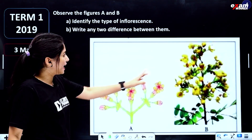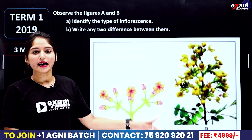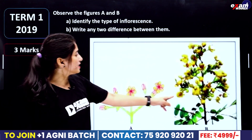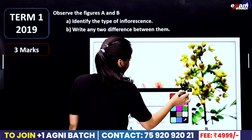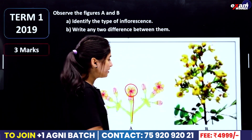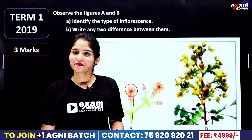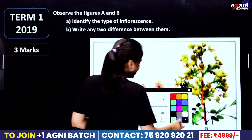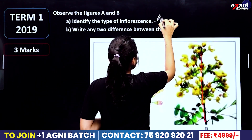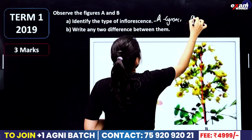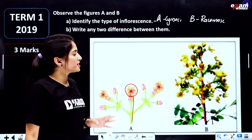Identify the figures A, M, and B. Identify the type of inflorescence. What is the main axis? Is the main axis continuing? Then what type of inflorescence is it? There are two types of inflorescence: racemose and cymose inflorescence. Write any two differences between them.